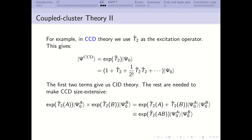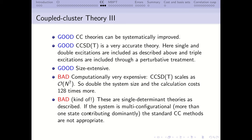Coupled cluster is in fact one of the best theories we have. The proof for size extensivity is quite simple. While coupled cluster is brilliant and accurate, the computational cost is quite high. The theory we like to use is CCSD(T), where the triples are included through perturbation theory. This scales as the seventh power of system size, meaning if you double the system size, the calculation costs 128 times more.